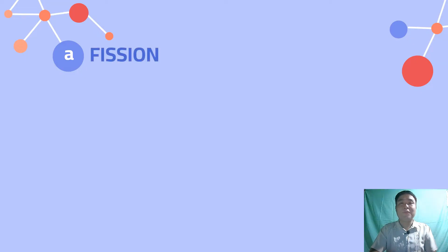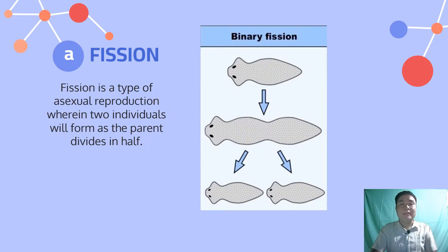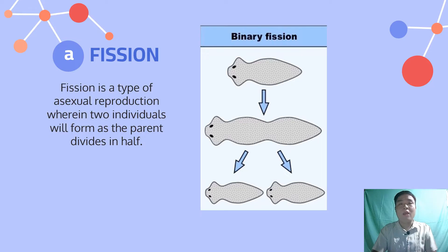The first type of asexual reproduction is fission, also known as binary fission. Fission is a type of asexual reproduction wherein two individuals will be formed as the parent divides in half. Common examples are bacteria, archaea, and cyanobacteria from prokaryotes, as well as amoeba and paramecium from eukaryotes, which use binary fission as their primary mode of reproduction. Some cell organelles, like mitochondria, also undergo cell division by binary fission.